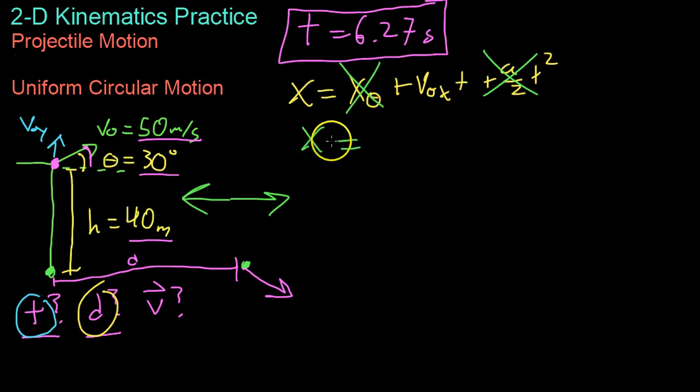From there, all we have to do is set x equal to the total time it took, which is 6.27 times the velocity. Because velocity is distance over time, multiplying by time will give you a distance. And so we have to do the same trick we did last time with the triangle for v0. This time we use the x component.